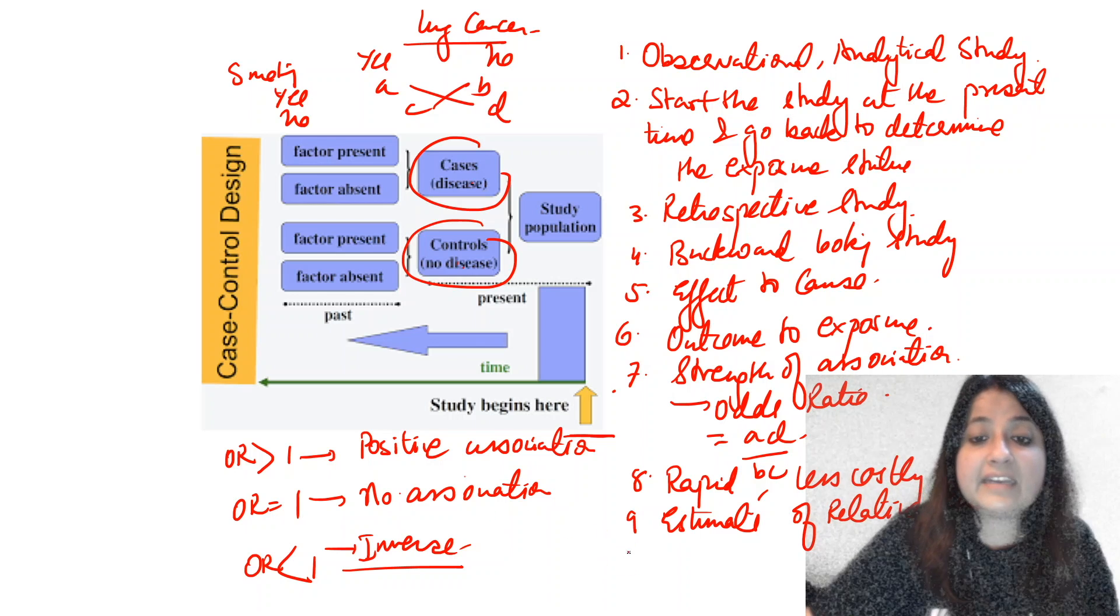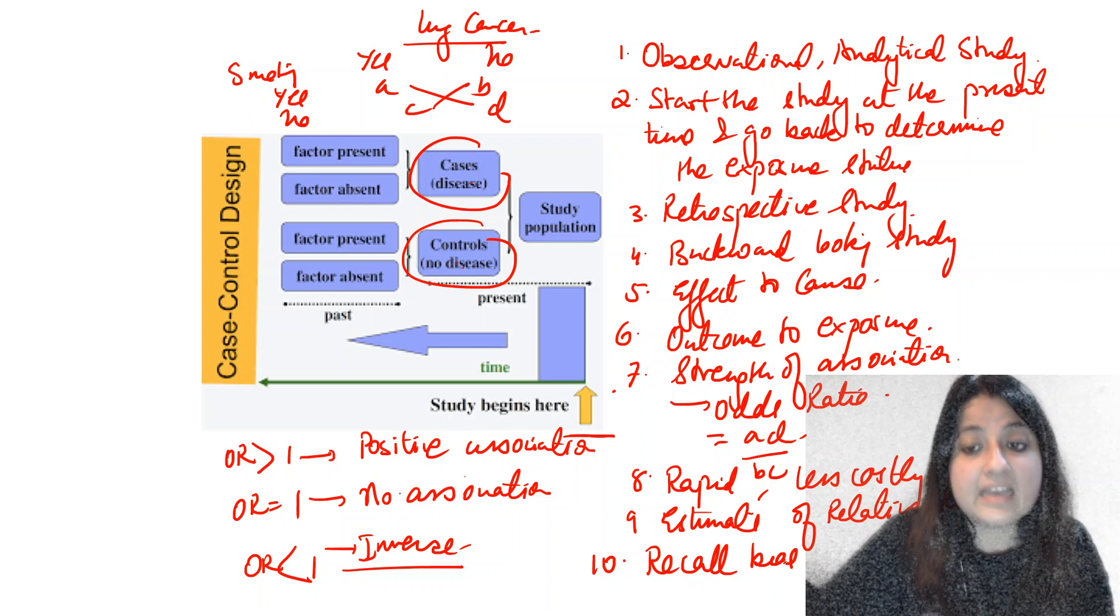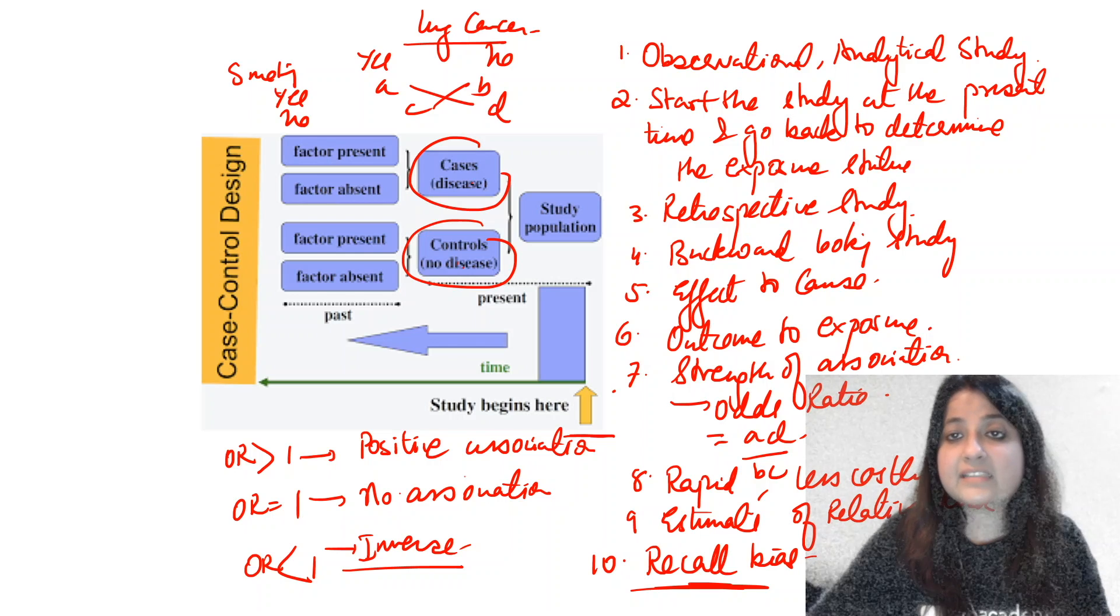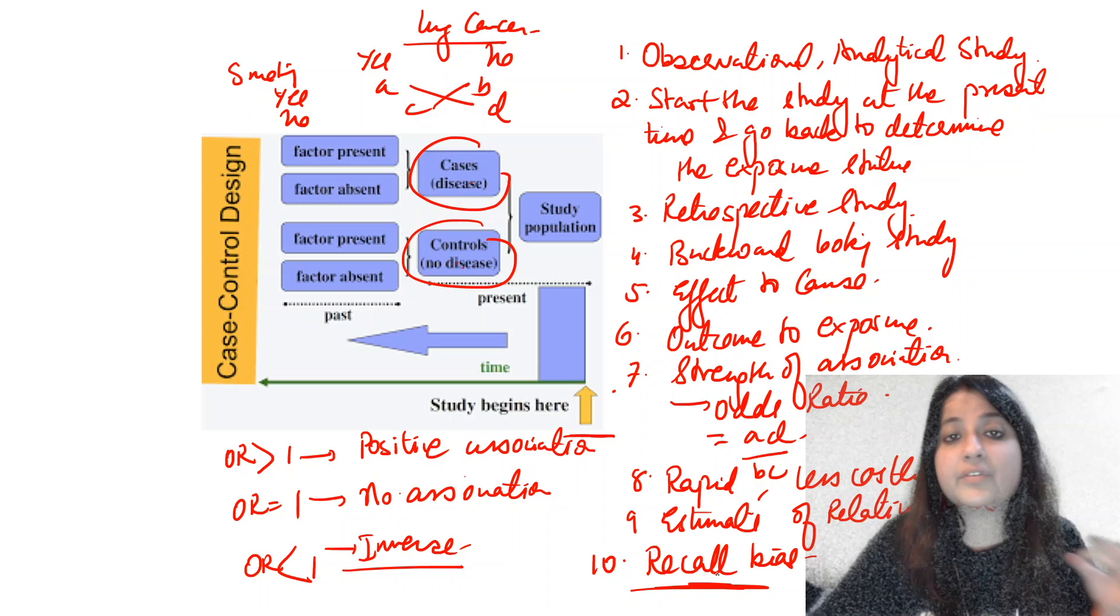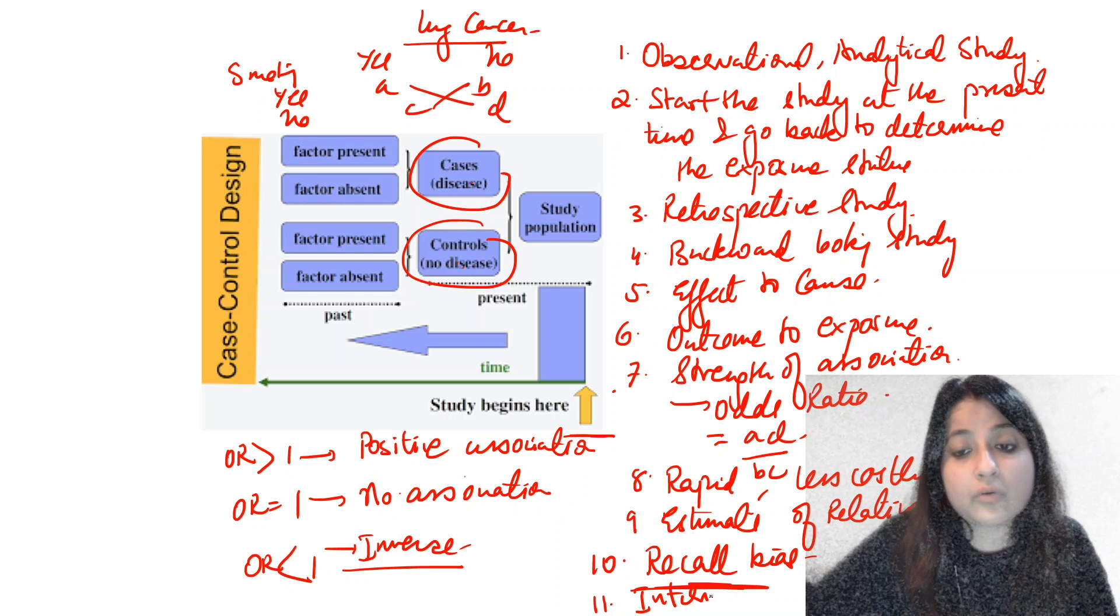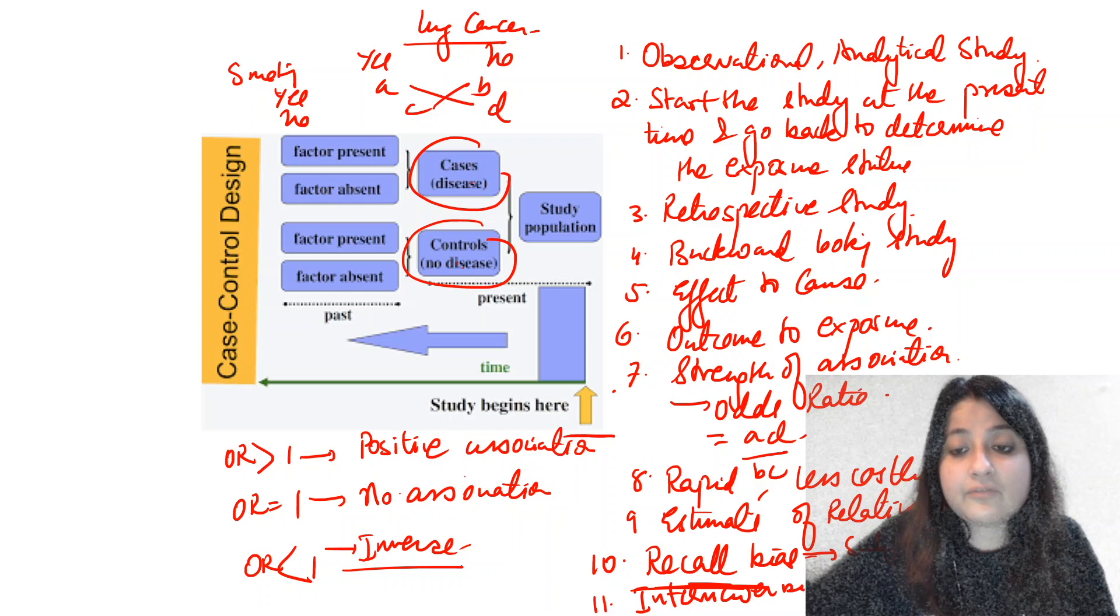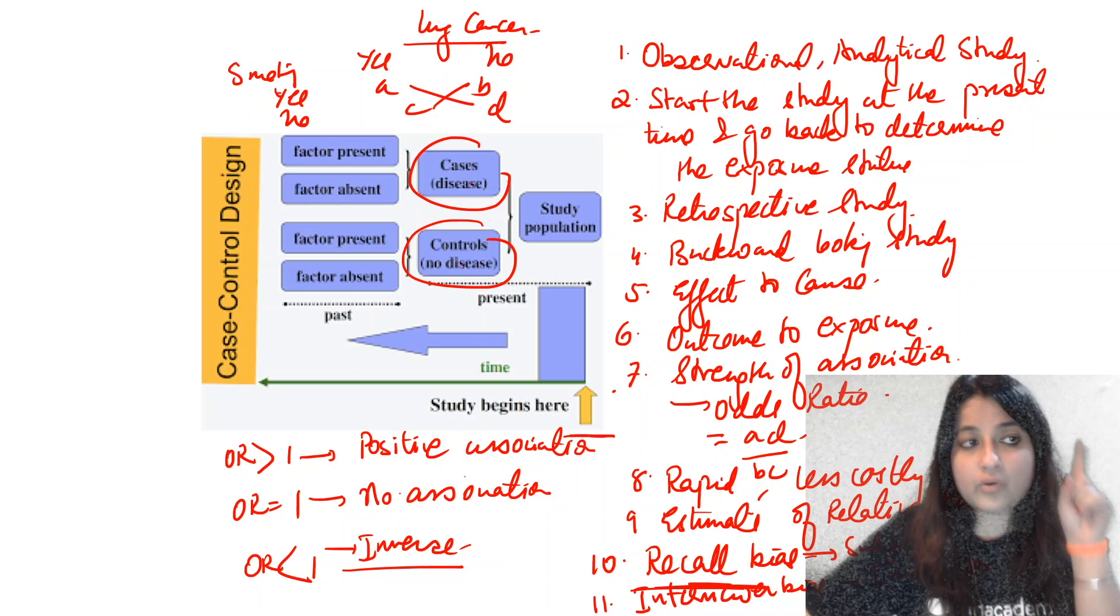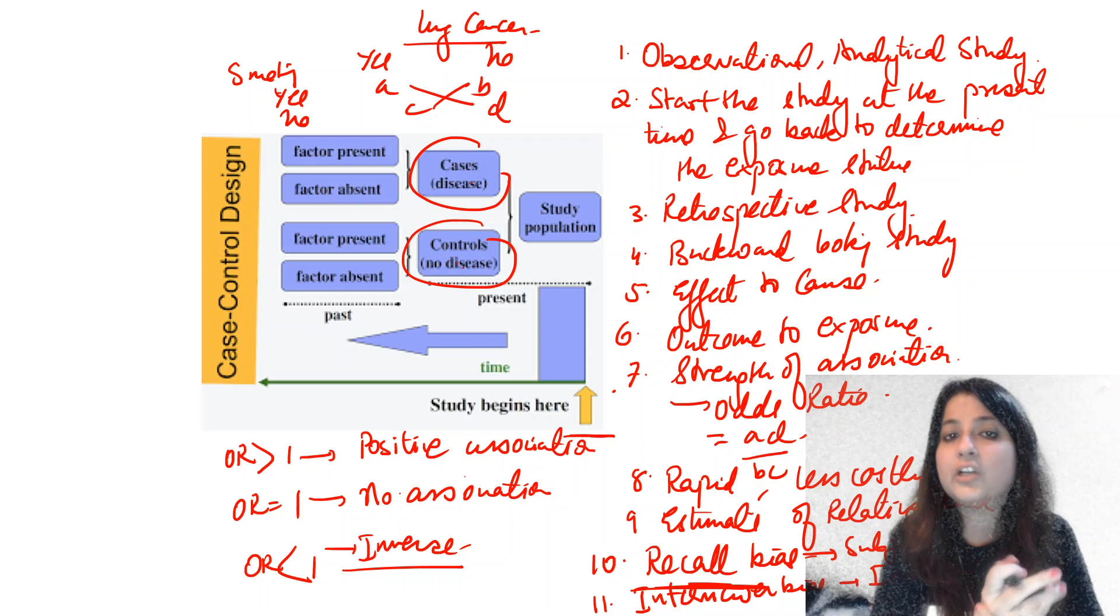Another important point is the most common form of bias we see in a case control is recall bias. Recall bias is very important because cases tend to remember, like if somebody has suffered from some disease, they remember everything about what might have led to that particular outcome. Recall bias is a form of subject bias. Interviewer bias is a form of investigator bias. I am the interviewer and I know he or she is a case, so I'm going to spend more time interviewing that case than the control, so that will give me a faulty estimate.